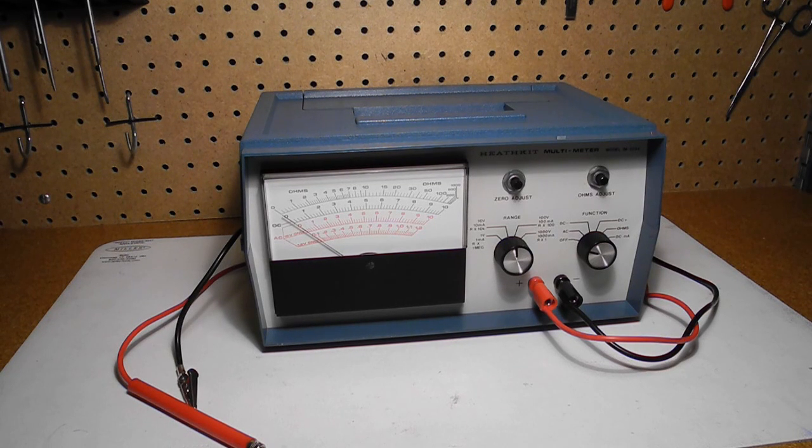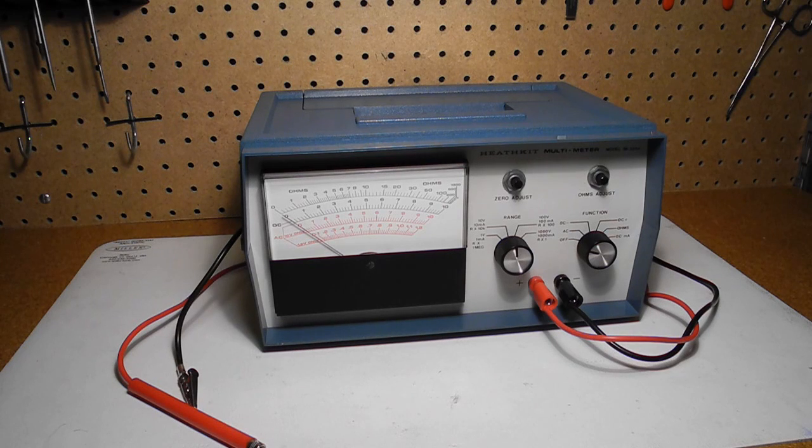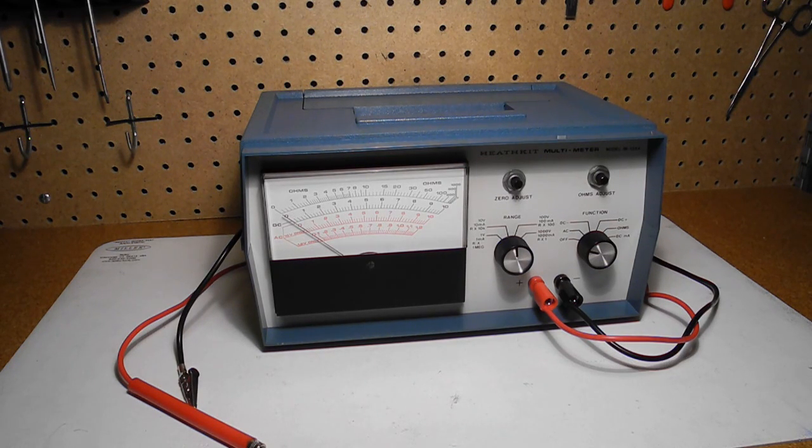I bought this unit on eBay in May 2015. It was a little dirty, but in good shape with few scratches or other issues. It came with test leads, but didn't come with a manual. I was able to find schematics and calibration information on the internet. I also found and purchased a manual on eBay shortly after I bought this unit, but have not received it yet.